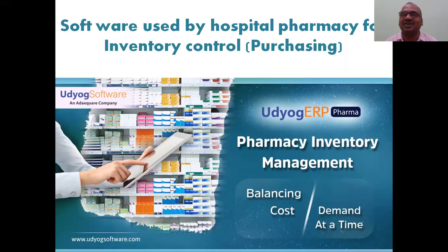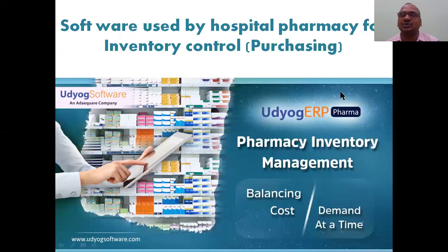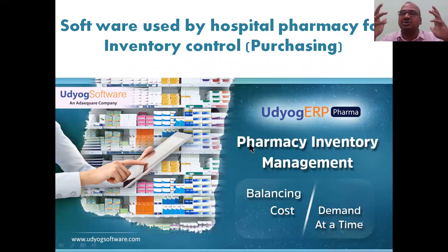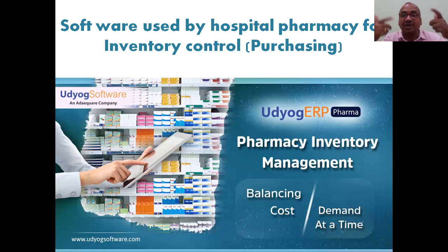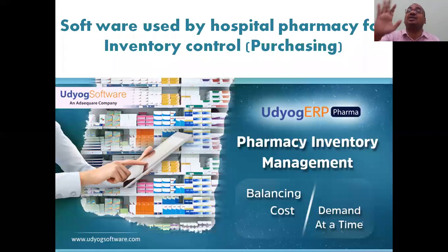The software used for inventory management is called Udhyog ERP — this point you must write in the examination. It is a pharmacy inventory management software that balances costs and demand. Once installed on the computer, it tells you how much to purchase, when to purchase, and gives an alarm bell when it is time to reorder. It is available especially for hospital pharmacy control.